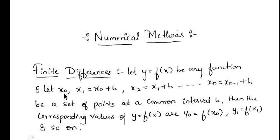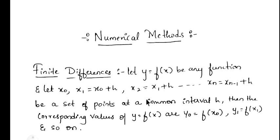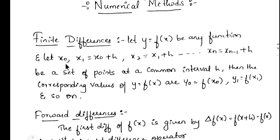If x0 is 0, then x1 = x0 + h = 0 + 1 = 1. I got the next point as 1. Next, x2 = x1 + h = 1 + 1 = 2. Like that, a set of points will be arranged. This is called finite difference.